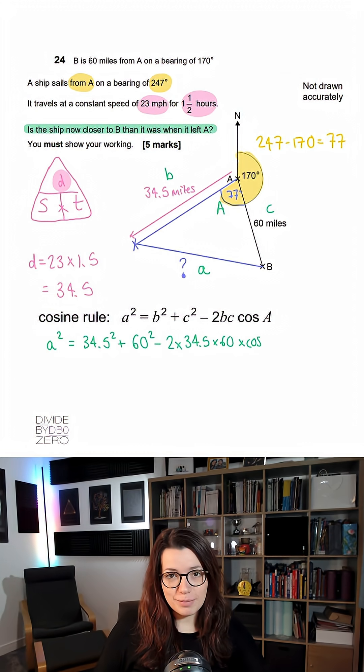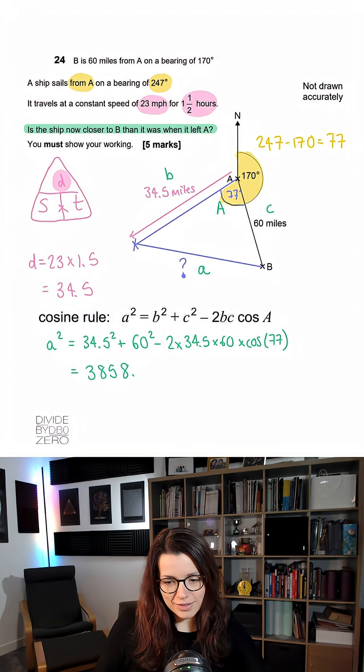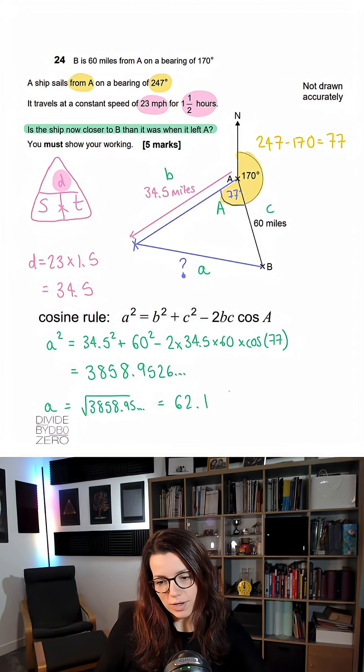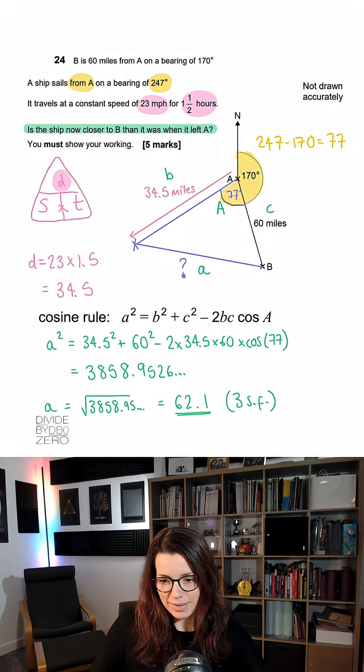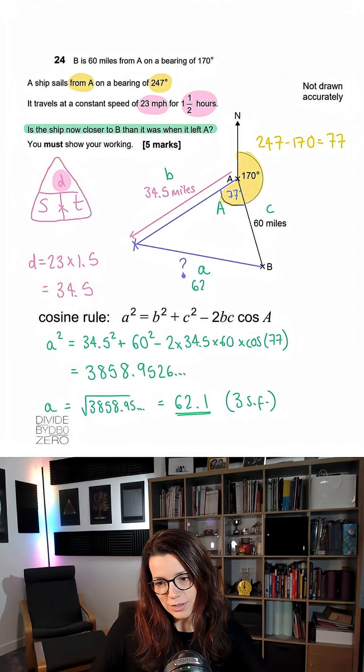From here I can just plug in the numbers. I type that carefully into my calculator and I get this. To get a, I have to square root that, and I get 62.1 to three significant figures. That means that this distance here is 62.1 miles.